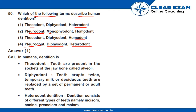The correct answer is diphyodont or heterodont. In humans, dentition is thacodont — teeth are present in the sockets of the jawbone, called alveoloid. Diphyodont means teeth erupt twice; temporary milk or deciduous teeth are replaced by a set of permanent or adult teeth.